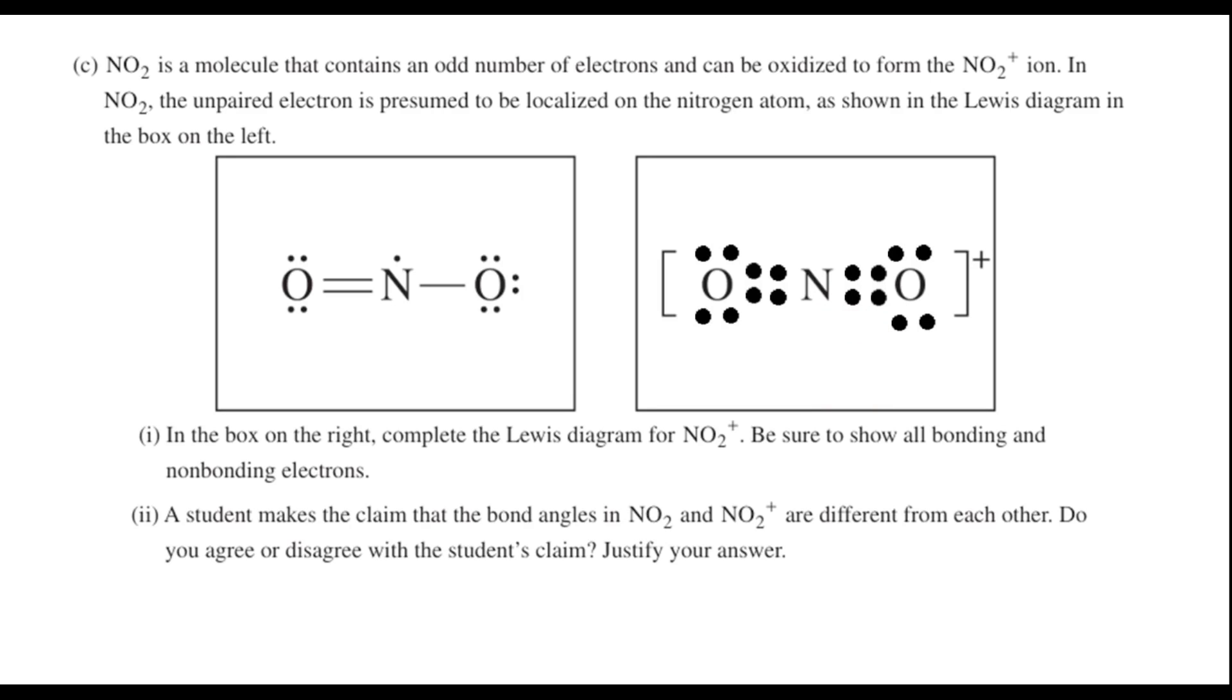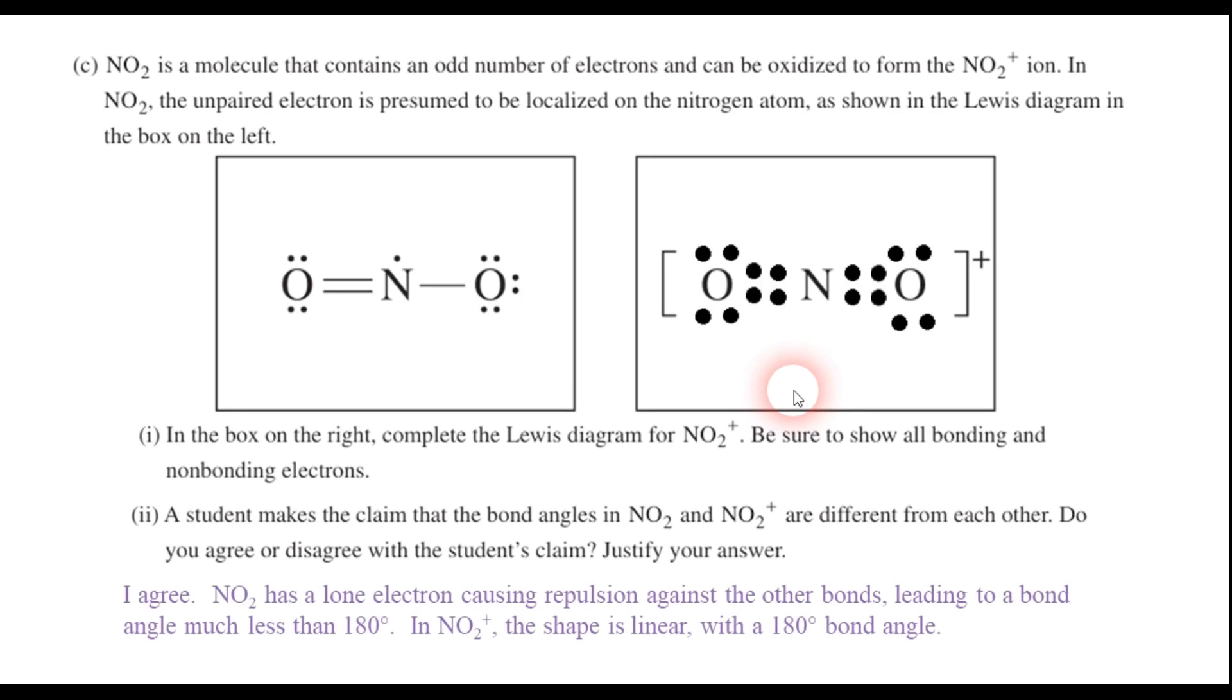And part C2 says a student makes the claim that the bond angles in NO2 and NO2 positive are different from each other. Do you agree or disagree? Well, you should agree. And the reason is the fact that there's a lone electron here on the NO2 molecule here on the left, and that lone electron is going to be exerting some repulsion. And so that means that this bond angle in between the N and the two oxygens will be significantly less than 180 degrees because of that repulsion right there. Over on the right side though, we have a linear structure. It looks like we have two double bonds that would be formed here, and so this tells me that this is going to be a linear structure, 180 degrees. So yes, these two bond angles are absolutely different from each other.